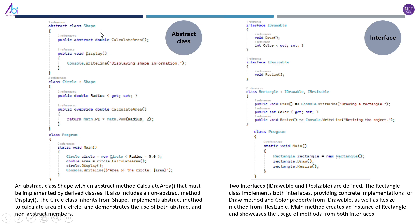Now let's look at some code examples. On the left side you can see an abstract class Shape with an abstract method CalculateArea that must be implemented by derived classes. It also includes a non-abstract method Display. The Circle class inherits from Shape, implements the abstract CalculateArea method to calculate the area of a circle, and demonstrates the use of both abstract and non-abstract methods.